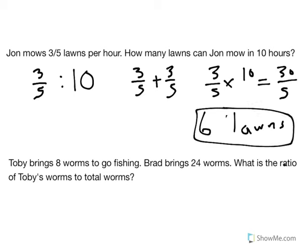The second problem says that Toby brings eight worms to go fishing and Brad brings twenty-four worms. What is the ratio of Toby's worms to total worms? We know that Toby brings eight worms, but we need to find out how many total worms there are.